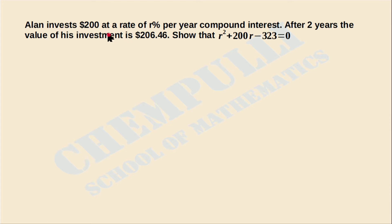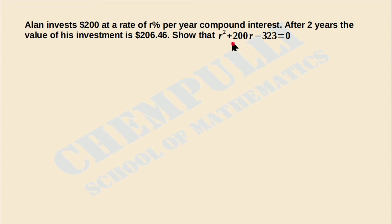Alan invests $200 at a rate of R percentage per year compound interest. After two years, the value of his investment is $206.46. We need to show that R² + 200R - 323 is equal to zero.